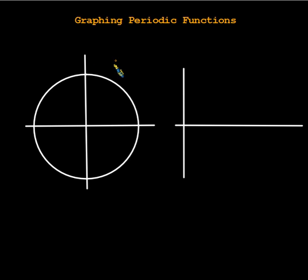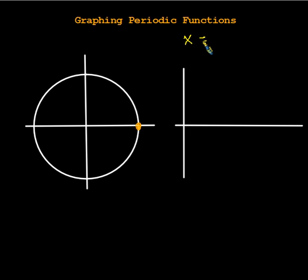So, periodic functions — we're going to start off really slow and easy. There's some more advanced stuff you need to know about graphing periodic functions, but we're going to start off really nice and slow and easy. The thing we're going to focus on is just how to take a simple function that's given to us, maybe something like x equals cosine of theta.